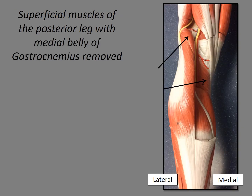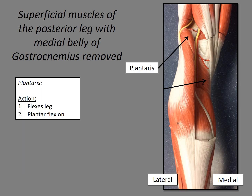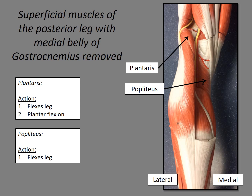If we remove the medial belly of the gastrocnemius, we expose some deep muscles in the leg. The first is the plantaris, a muscle that flexes the leg and also plantar flexes the foot. It appears relatively small in the leg, but if we follow the tendon all the way down, it's a relatively long tendon extending into the foot — allowing both leg flexion and plantar flexion. The other muscle here is the popliteus, and the action of this muscle is to also flex the leg.